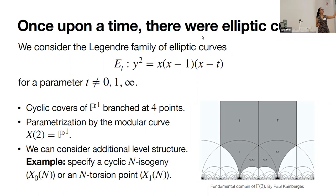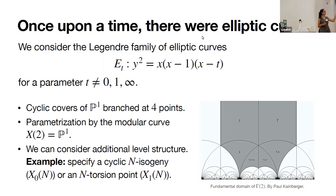Our favorite Legendre family of elliptic curves looks like y² = x(x−1)(x−t), where we have a parameter t different from 0, 1, and infinity. What's special about these elliptic curves for us is they are cyclic covers of P¹ that are branched at four points, and they are parametrized by the modular curve X(2), which is P¹.